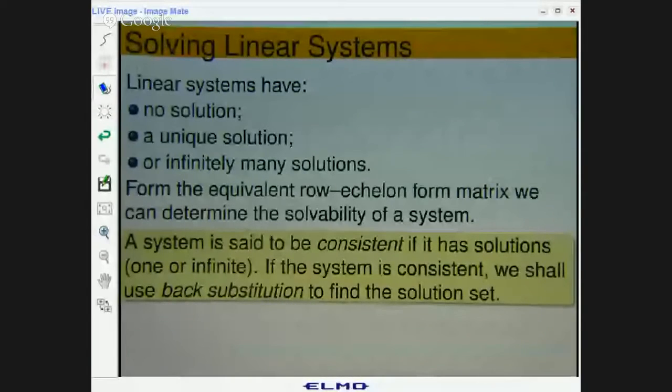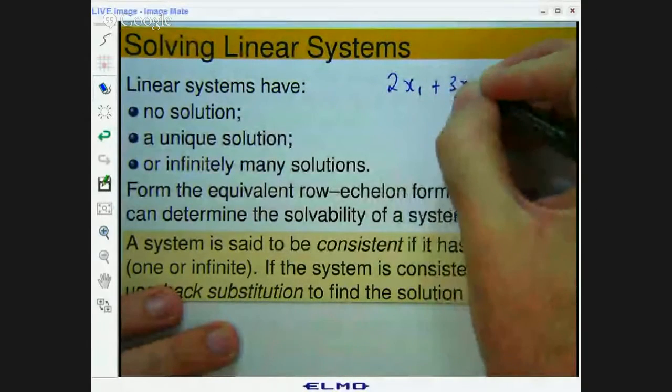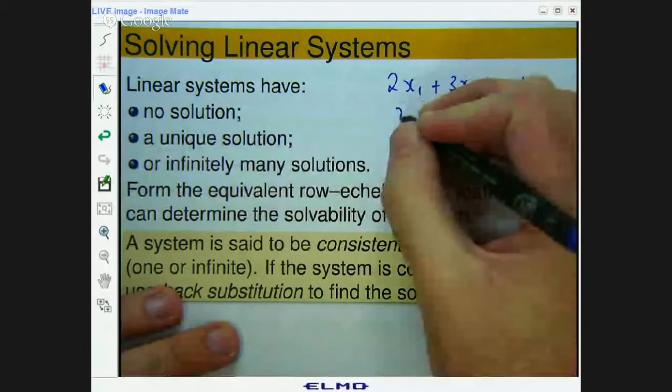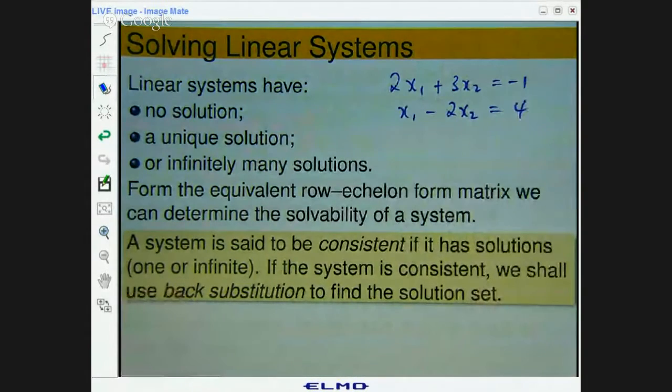Okay, so what do we mean by solvability? Let me share my screen with you. So a linear system might be something like this: 2x1 plus 3x2 equals negative 1 and x1 minus 2x2 equals 4. That's a linear system.